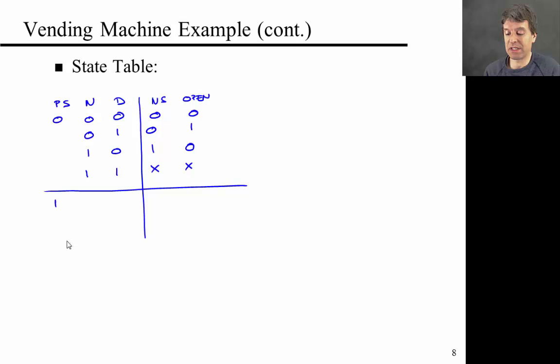Now, conversely, if I'm in state one, I can also look at all the different combinations of the inputs again and complete the truth table, which should look something like this: one, zero, zero, zero, x, and zero, one, one, x.